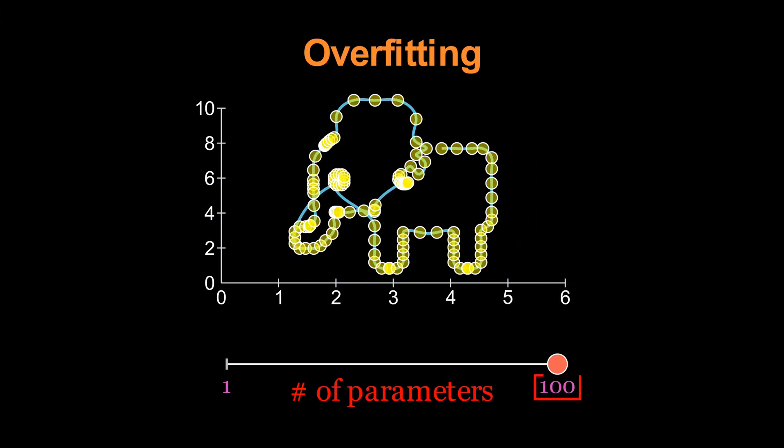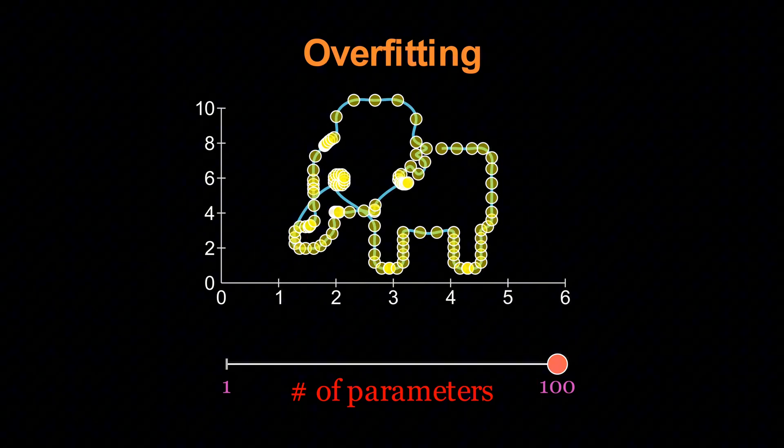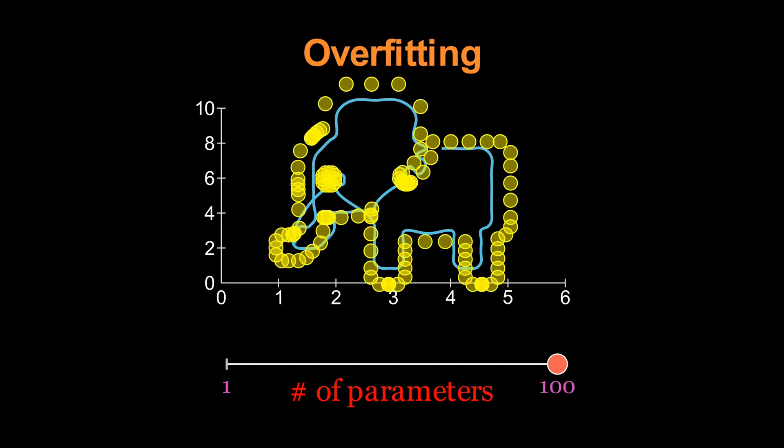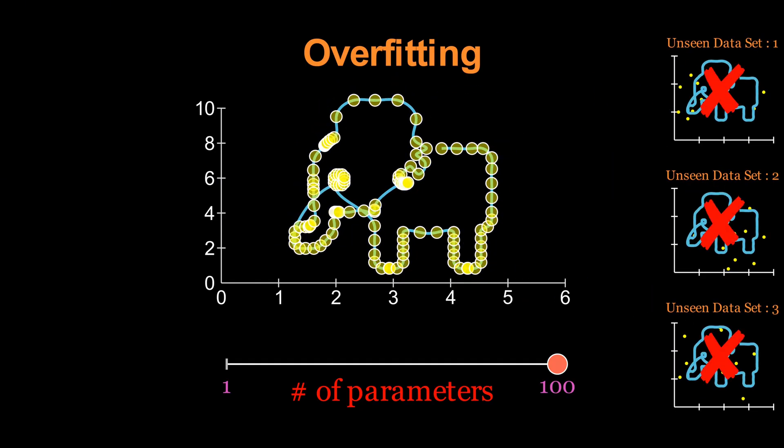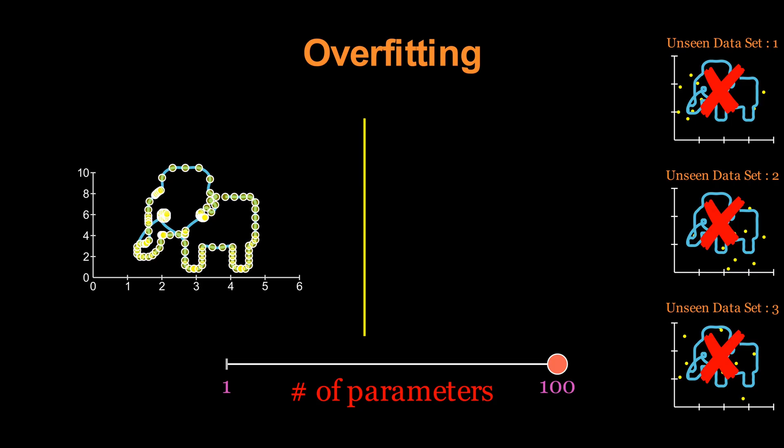Overfitting happens when a model is so flexible, so unconstrained, that it adapts too closely to the quirks of the training data, losing its ability to generalize. And this problem is not unique to machine learning.